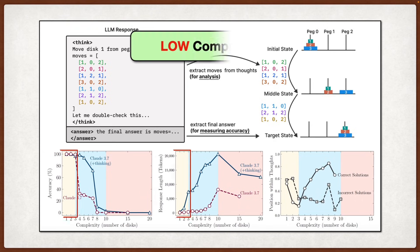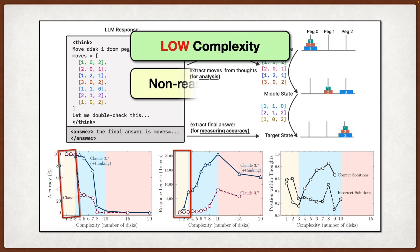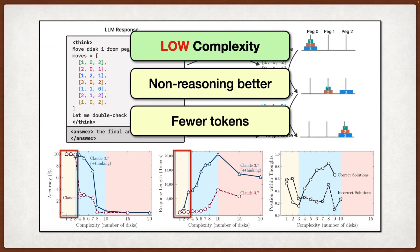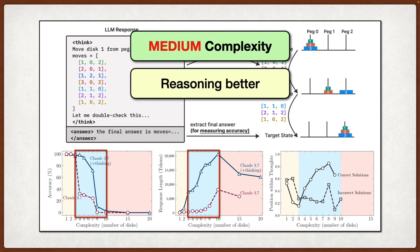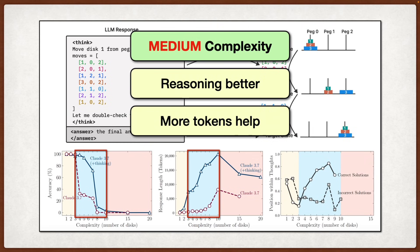The main finding is this three-regime behavior that's quite different from what you see on math benchmarks. In the low-complexity regime, non-thinking models actually outperform reasoning models and are more token efficient, which suggests that for simple problems, the overhead of extended reasoning actually hurts performance. In the medium-complexity regime, the reasoning models start to show their advantage because the additional thinking helps them explore multiple solution paths and self-correct when they make mistakes.